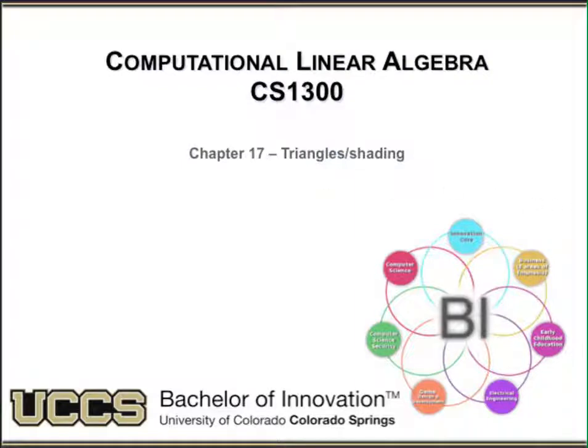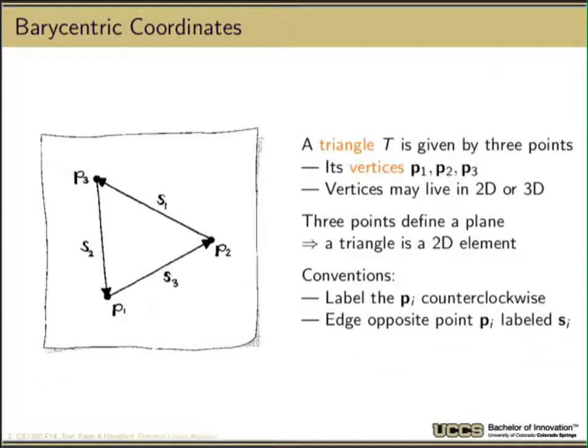Hi, and welcome to our Composition of the Alphabet. Today we'll be discussing chapter 13 on triangles and shading. If we think about triangles, we've already talked briefly before about a triangle is mapped by its vertices P1, P2, and P3.